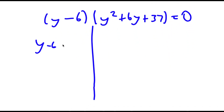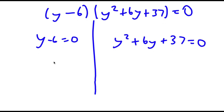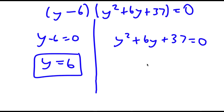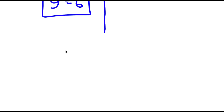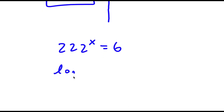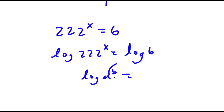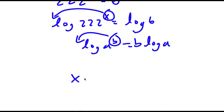This simplifies to y minus 6 times y squared plus 6y plus 37 is equal to 0. So this gives me y minus 6 equals 0 and y squared plus 6y plus 37 equals 0. For y minus 6 equals 0, y is equal to 6. For y squared plus 6y plus 37 equals 0, there's actually no solution because if you plug this into the quadratic formula, you get the square root of a negative number. So y equals 6 is my only solution. Remember we let 222 to the power of x equal y, so 222 to the power of x is equal to 6. Taking the log on both sides and moving x to the front, I get x is equal to log 6 over log 222.